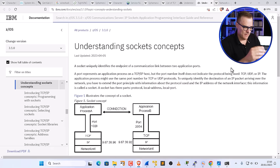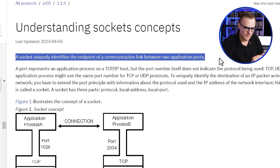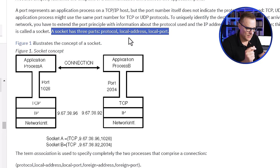So you've probably been waiting to know the difference between a port number and a socket. IBM have a great example: a socket uniquely identifies the endpoint of a connection between two application hosts, and it has three parts — a protocol, a local address, and a local port number. Port numbers are different; they are not associated with an IP address or a protocol. For example, port 53 could be DNS using TCP or DNS using UDP. In a connection between hosts A and B, socket A would be TCP, IP address 9.6.7.38.96, and port 1028 — that combination of protocol, IP address, and port number is the socket.